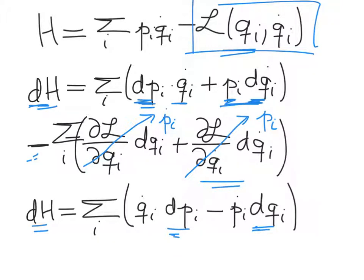The book makes the point that this transition from one set of variables to the other — when we use qi and qi dot we're expressing the dynamics in what the book calls configuration space, where these are essentially the axes of our dynamical system. When we transfer over to pi and qi dependence, we express the dynamics in what's called phase space. The distinction isn't hugely important at this level of Hamiltonian mechanics, but it's important to have heard these expressions so that when you return to this topic later you'll understand what they refer to.